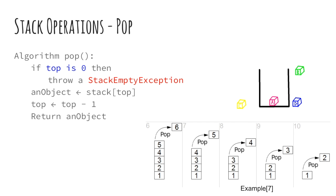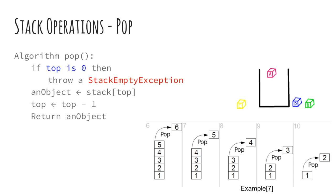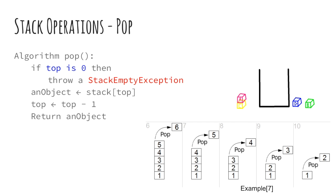Here is a pseudocode for pop operation. The operation pop will remove a data item from the top of the stack. The pop operation does not take any argument, and after removing the element, the stack top also changes. Before removing the element, we must check if the stack has any data. If the stack is already empty, then pop will cause an error and it should be handled in the implementation.